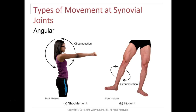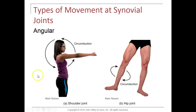Circumduction is a complex movement at synovial joints — not all diarthrotic joints allow this. At your shoulder joint, if you hold your arm outward and make a big circle, you have a larger circle at the distal end than at the pivot point — that's called circumduction. Circumduction actually involves four different movements: flexion and extension, and abduction and adduction. If you stick your arm out and make a cone shape, rotating your limb in a circle with a larger circle distally and smaller at the pivot point — that's circumduction.